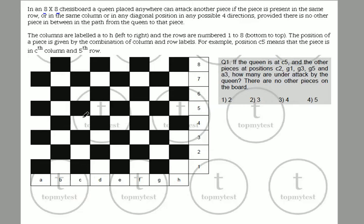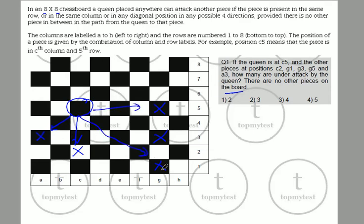Question 1 says the queen is at c5, and the other pieces are at positions c2, g1, g3, g5, and a3. How many pieces are under attack by the queen? There are no other pieces on the board. The queen can take c2, g5, g3 along the diagonal, and a3 — so there are four pieces under attack. Option 3 is the correct choice.